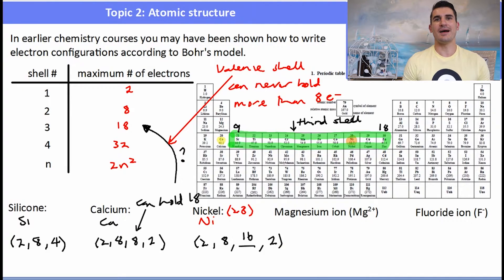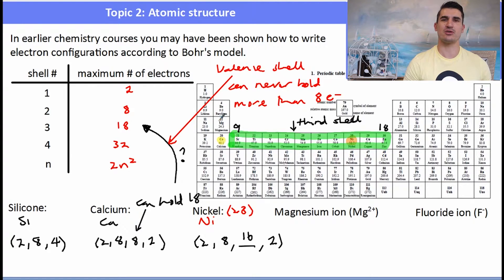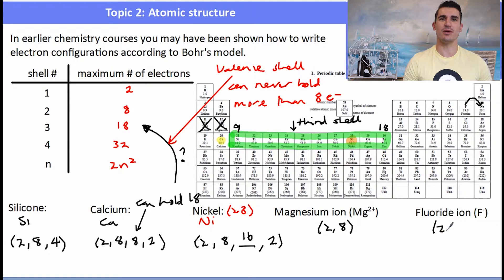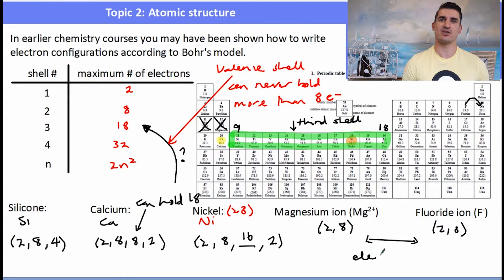A magnesium ion is a magnesium atom that has lost two electrons, so it has 10 electrons. Its electron configuration is 2, 8. A fluoride ion is a fluorine atom that has gained one electron, giving it 10 electrons, with configuration 2, 8 as well. These two ions are called isoelectronic because they have the same electron configuration.